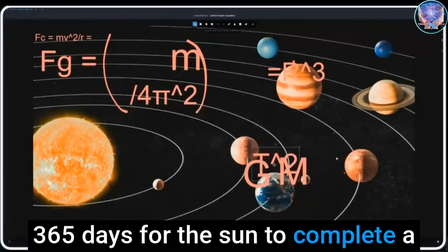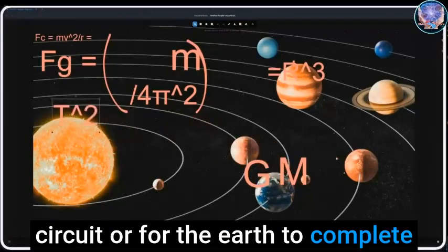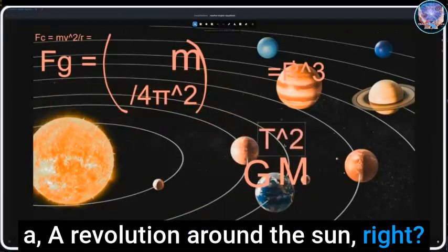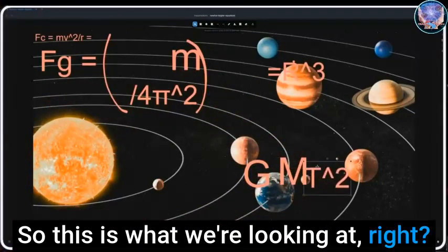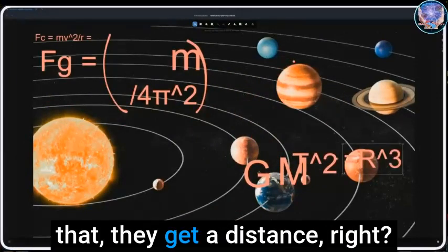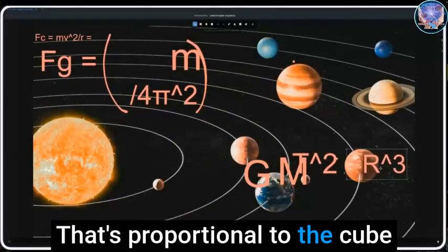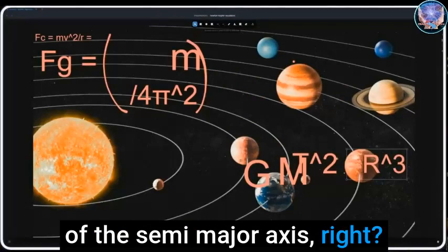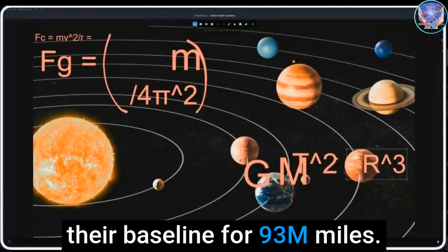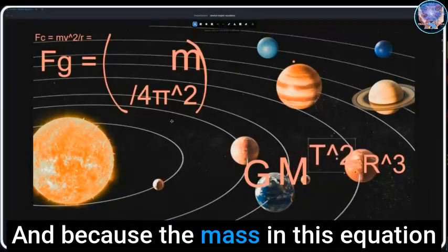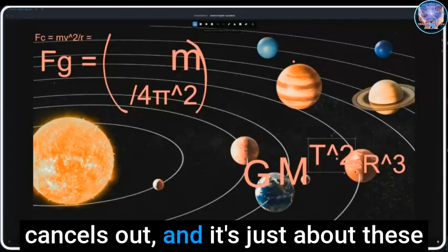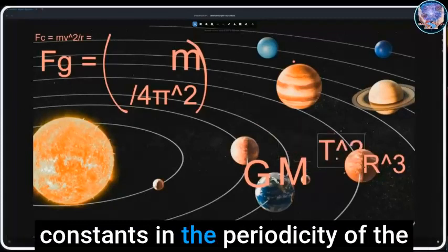365 days for the sun to complete a circuit, or for the earth to complete a revolution around the sun. So this is what we're looking at. When they apply all that, they get a distance that's proportional to this cube of the semi-major axis. That's where they establish their baseline for 93 million miles.